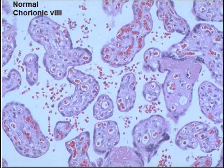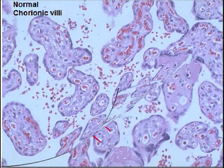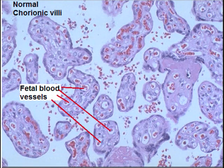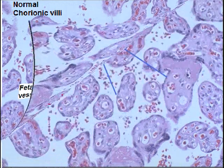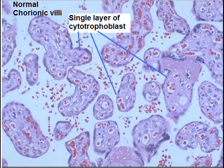For comparison, normal chorionic villi have fetal blood vessels inside the villi and there is no hydropic change — no swelling. You can appreciate there is a single layer of trophoblastic tissue, the cytotrophoblast, and there is no trophoblastic proliferation in normal placental tissue.